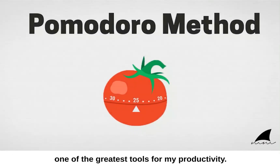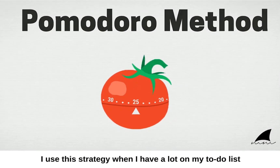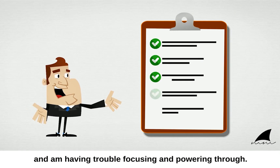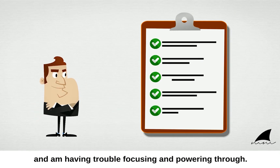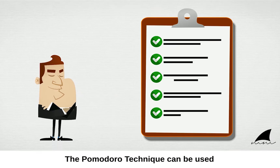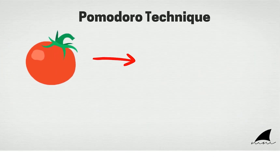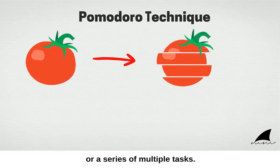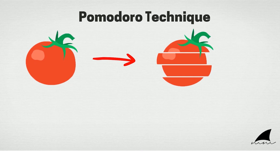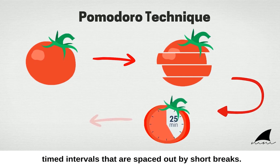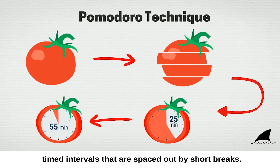The Pomodoro Method has been one of the greatest tools for my productivity. I use this strategy when I have a lot on my to-do list and I'm having trouble focusing and powering through. The Pomodoro Technique can be used when you're faced with large tasks or a series of multiple tasks. It helps you break down the work into short, timed intervals that are spaced out by short breaks.